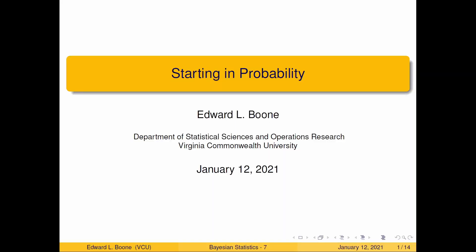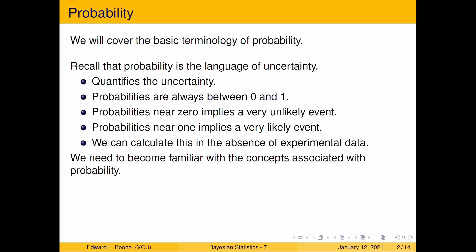Welcome to Starting in Probability. This is part of an applied Bayesian statistics course offered at Virginia Commonwealth University. We're going to really start formalizing what we mean by probability. We saw empirical probability just to give you the notion of what's going on, but now we really want to start formalizing things so we can talk about probability. Recall that probability is the language of uncertainty — it quantifies that uncertainty.